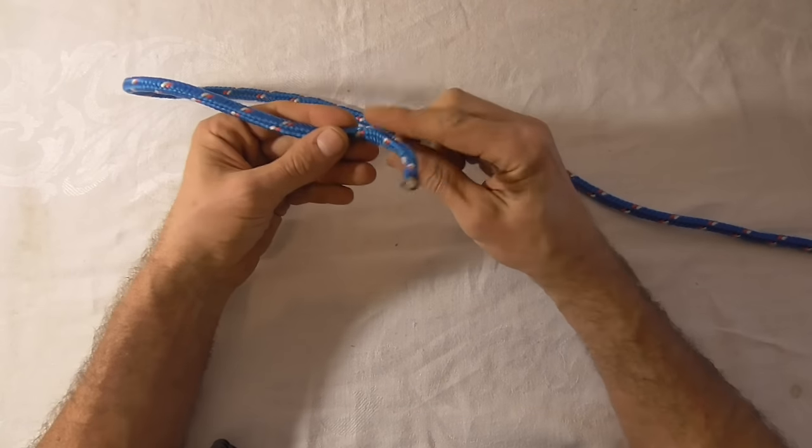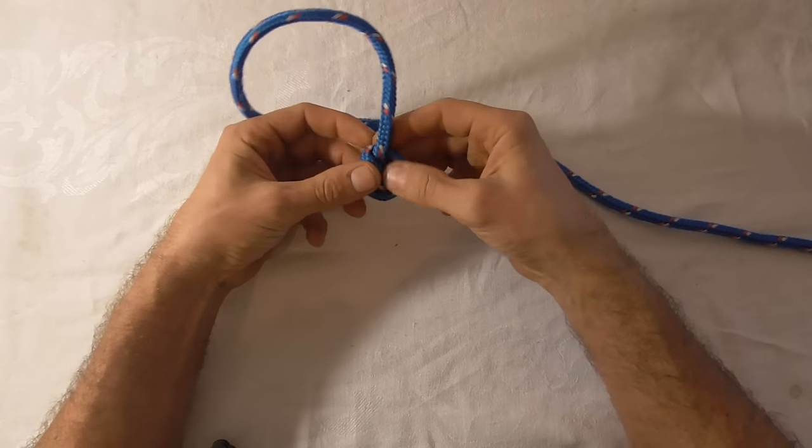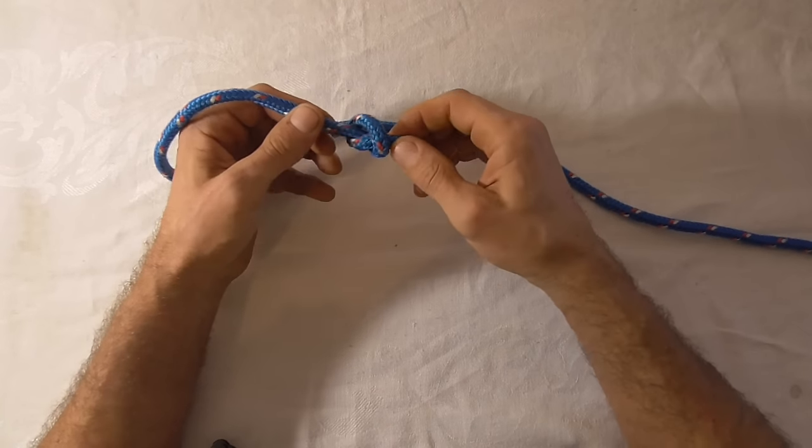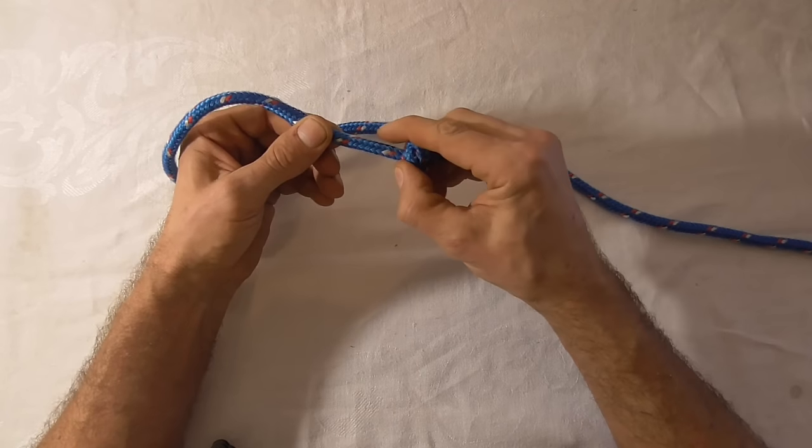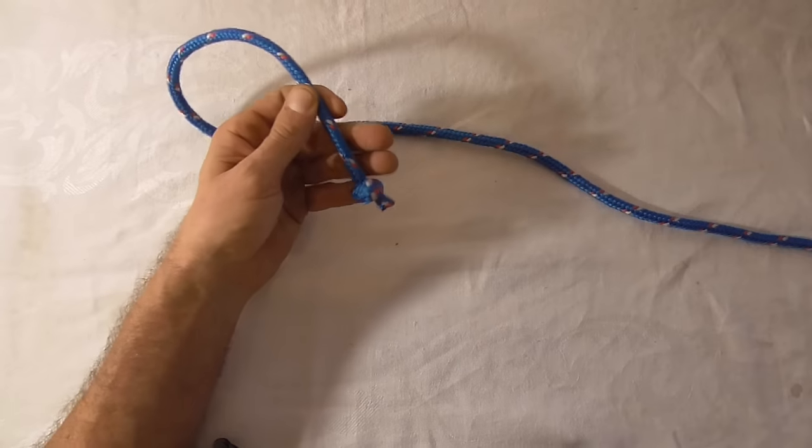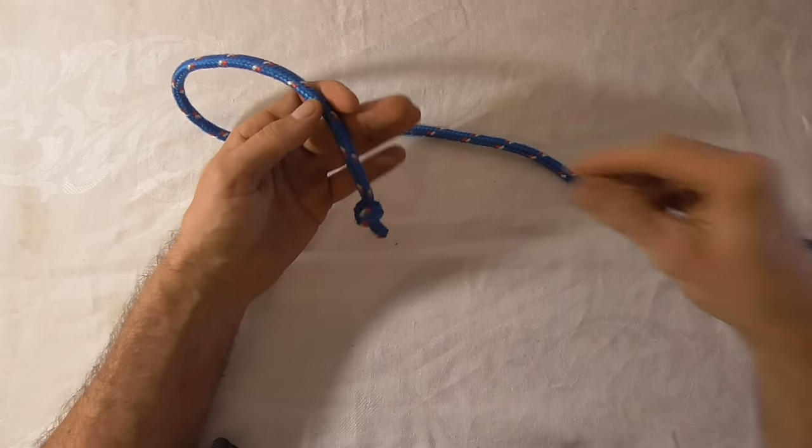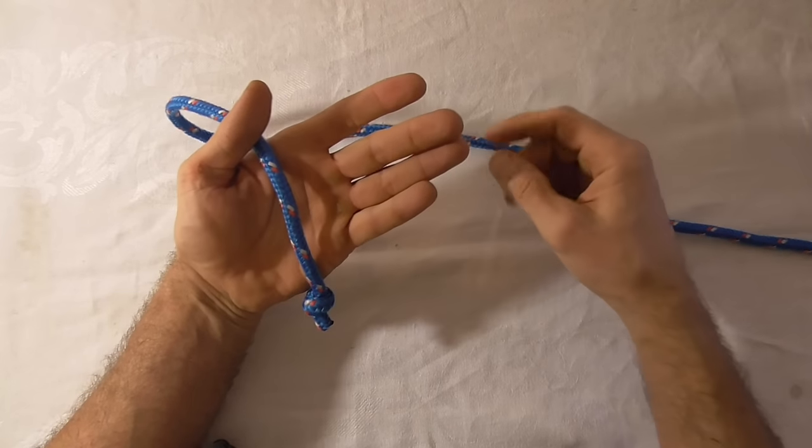first of all I want to put a stopper knot on the end of my rope and I'll do that just by tying an overhand knot. Just pulling it tight and work it as close to the end of the rope as you can.